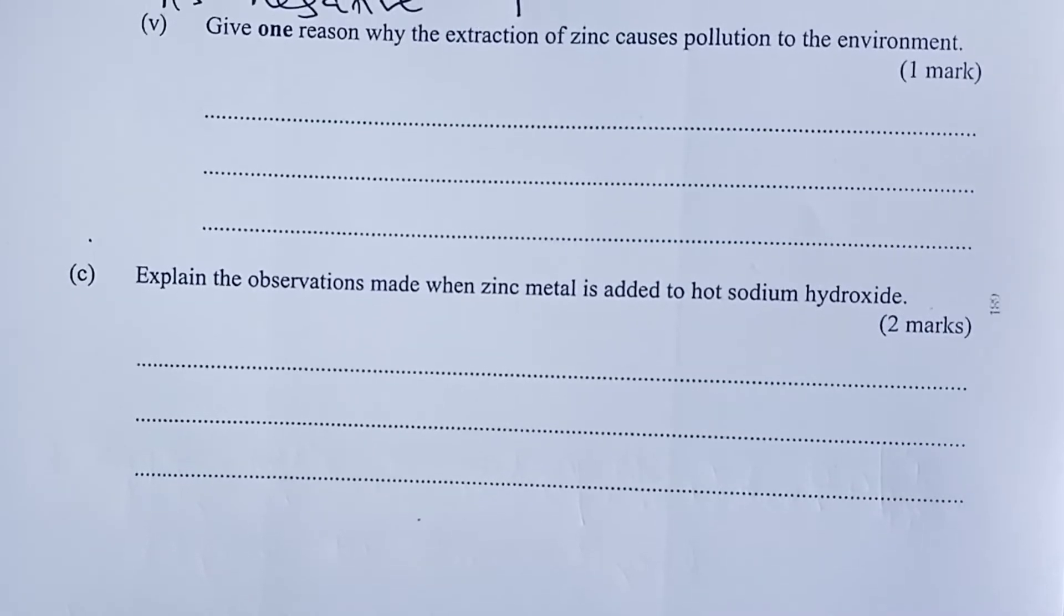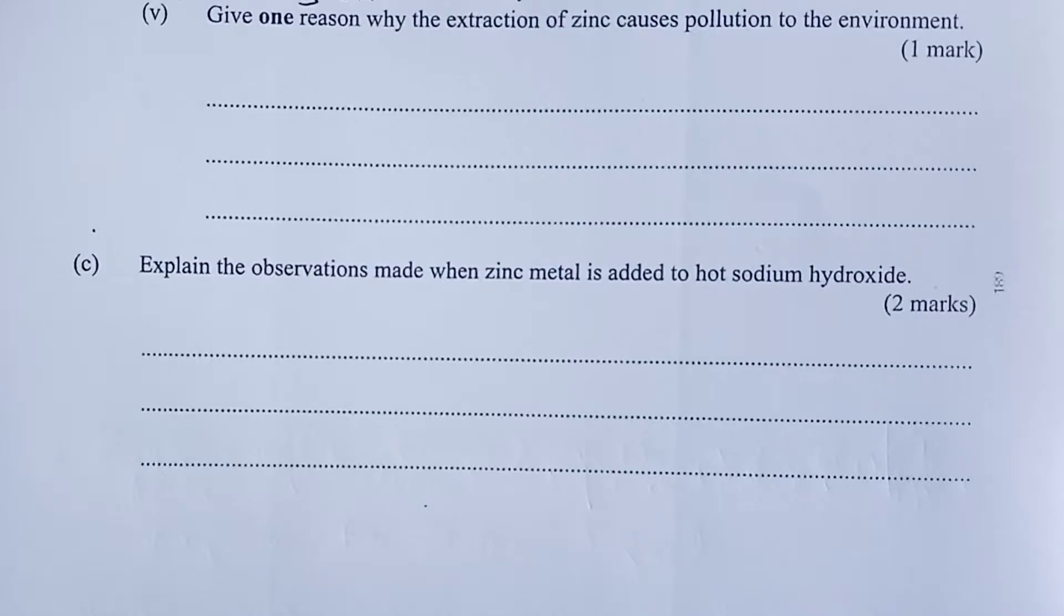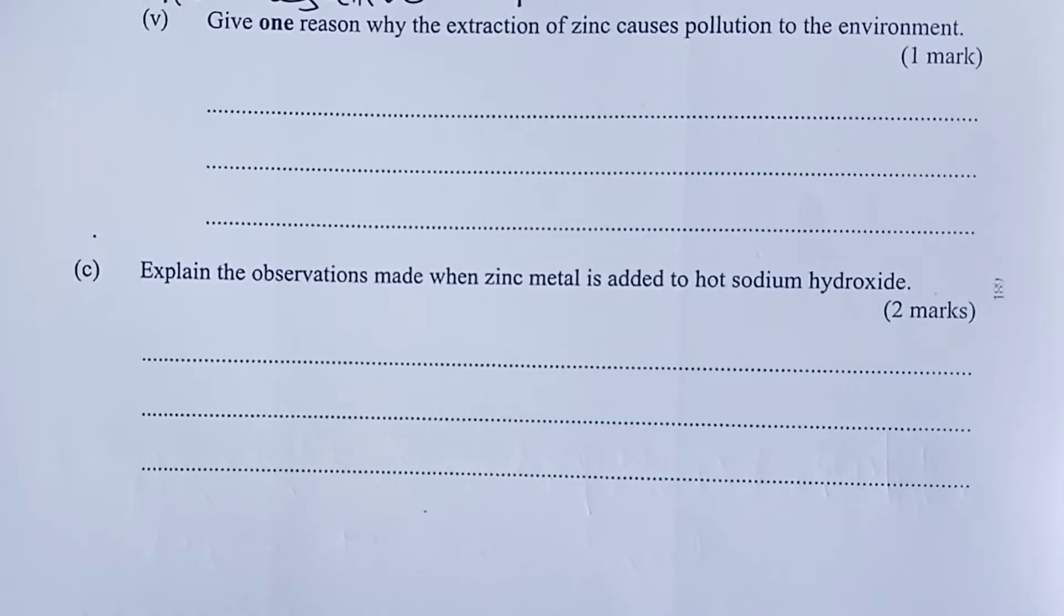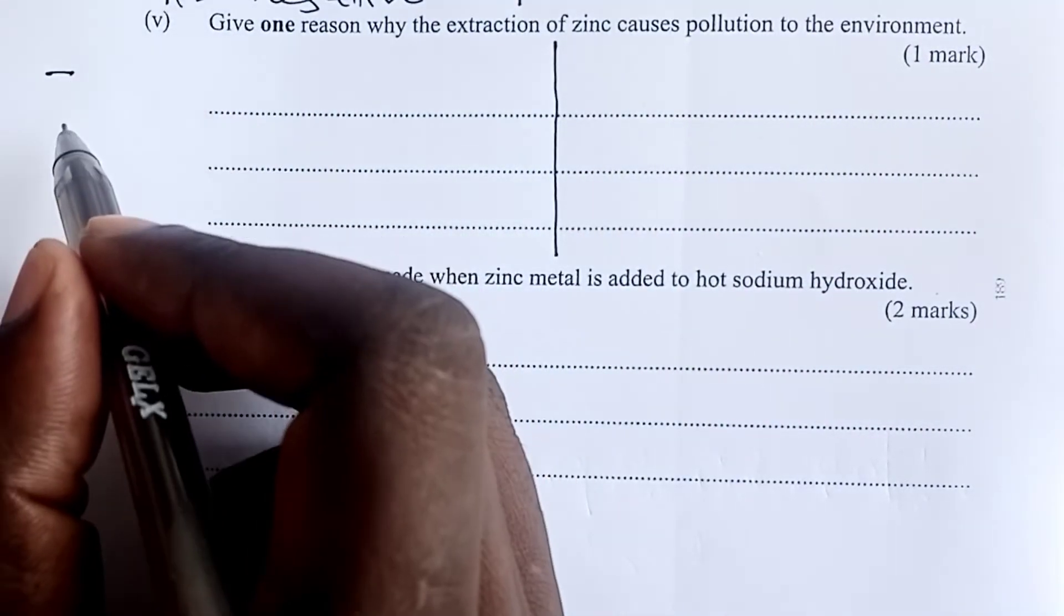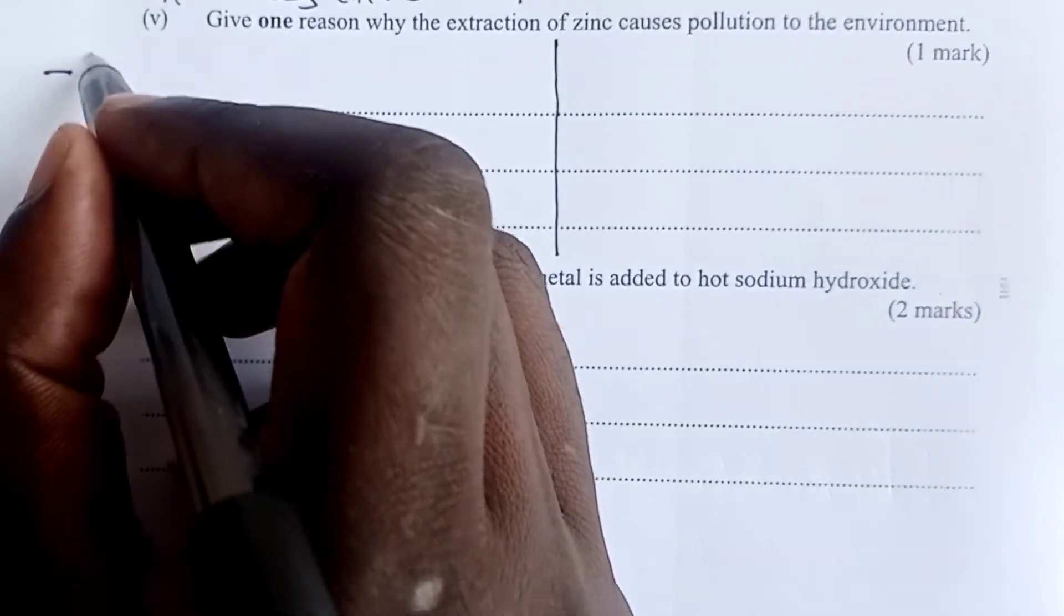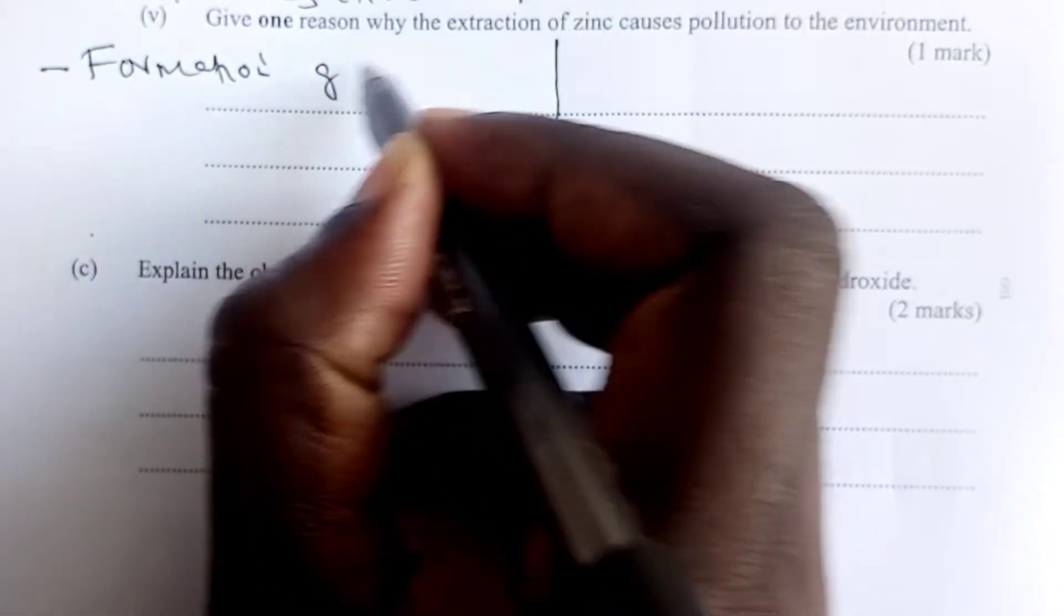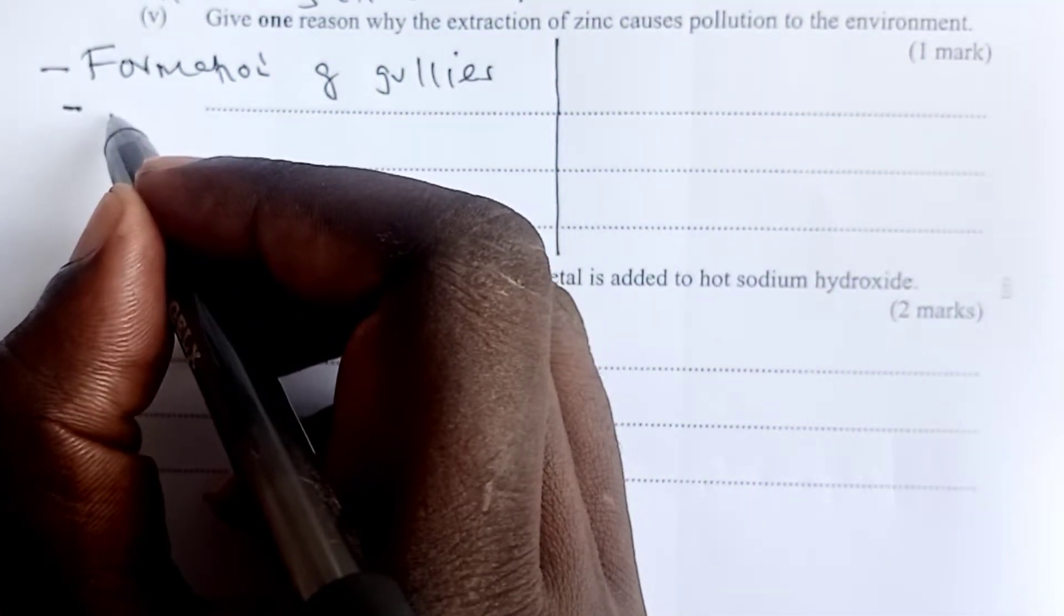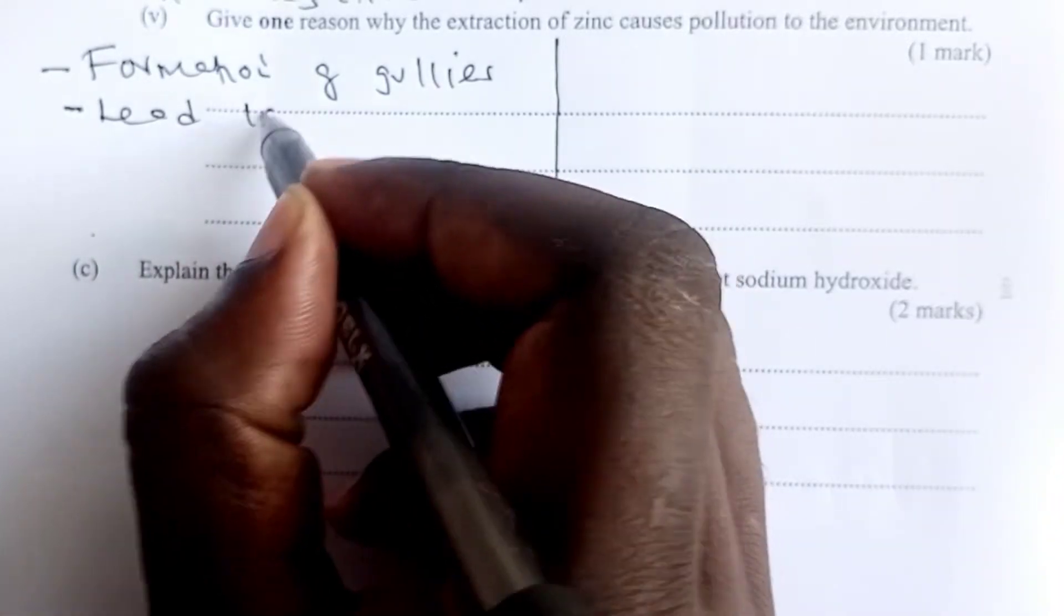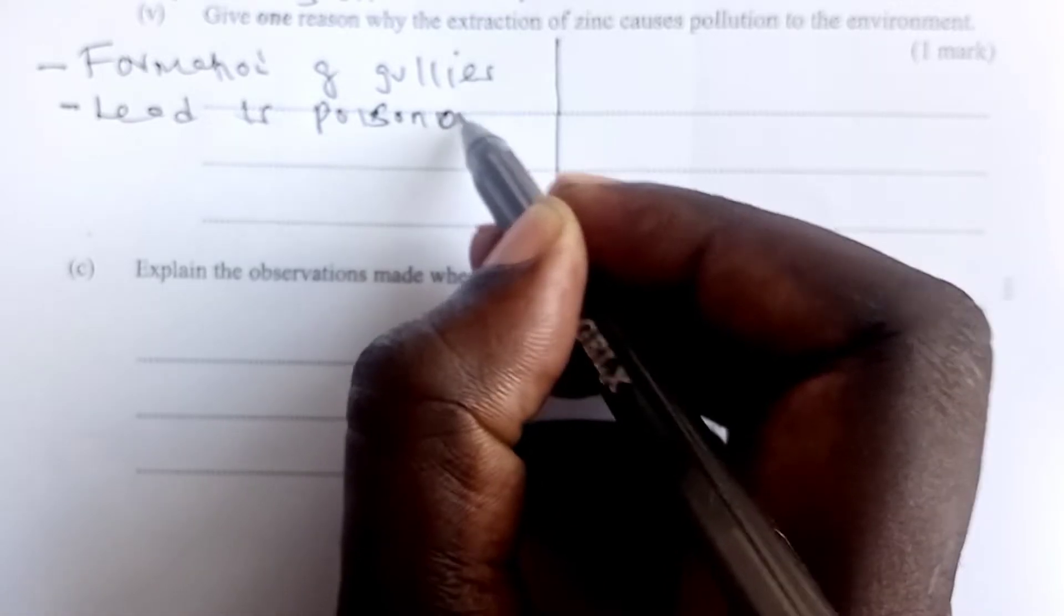Second last question is about reason why extraction of zinc causes pollution to the environment. And here we have several reasons. One, being formation of galleys. Two, we have the fact that lead itself is poisonous, leading to lead poisoning.